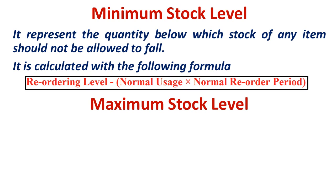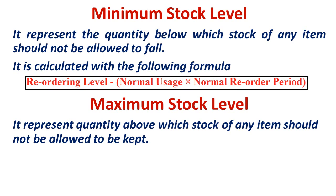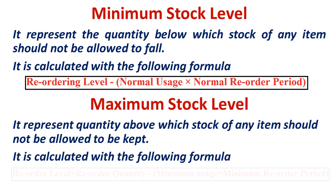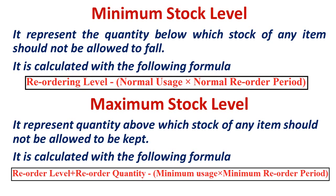Maximum level is the maximum amount of material that should be maintained in the organization. It is calculated as reorder level plus reorder quantity minus minimum usage multiplied by minimum reorder period. Reorder quantity here refers to economic order quantity — the quantity of material placed in an order with the supplier. I have made a video on EOQ as well, which will be shared in the i-button and description box.